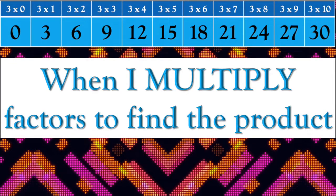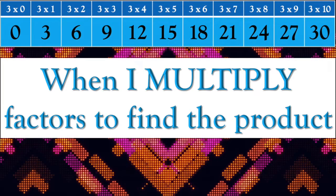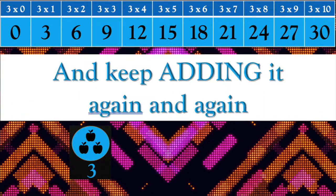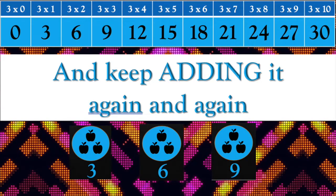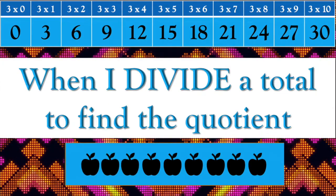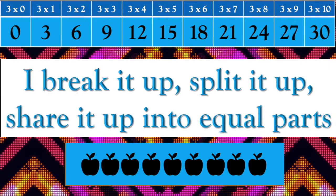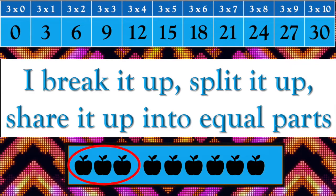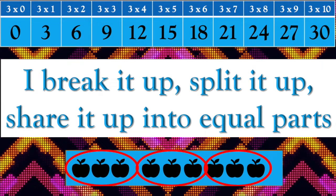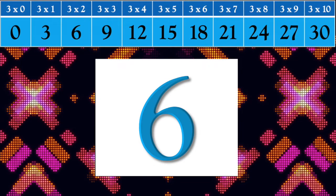When I multiply factors to find the product, I get one equal group and keep adding it again and again — called repeated addition. When I divide a total to find the quotient, I break it up, split it up, share it up into equal parts — call repeated subtraction.